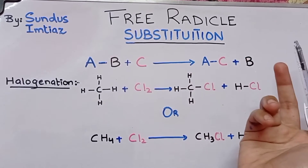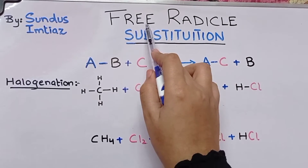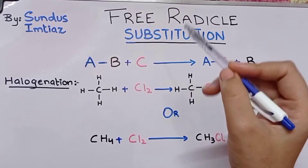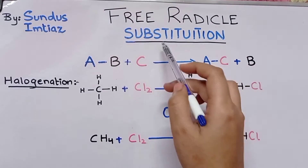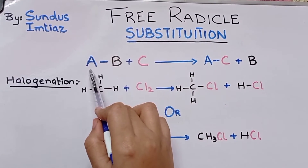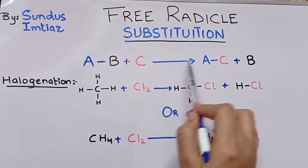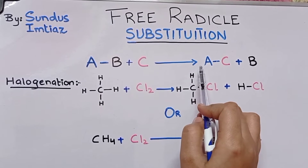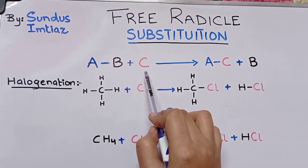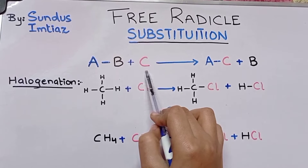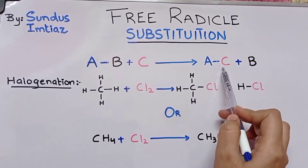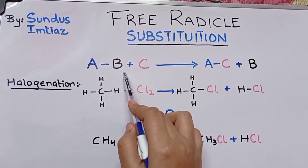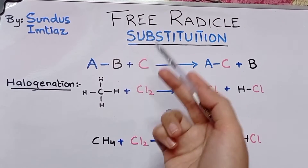What is a free radical substitution reaction? A free radical is any element that has an unpaired electron in its outermost shell. Substitution means that in a reaction A bonded with B reacts with C, and B is replaced with C, giving AC as the product.